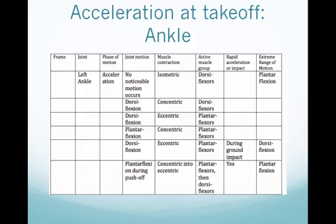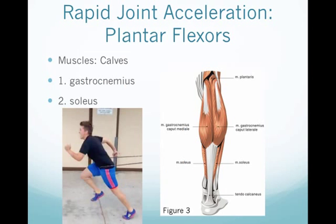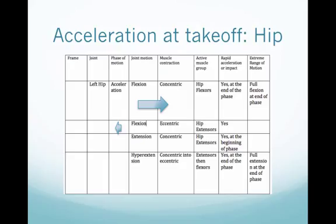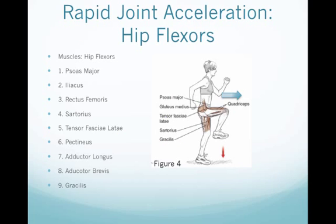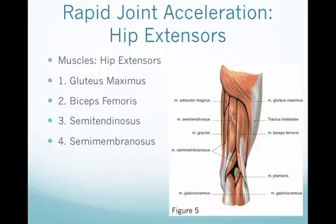During acceleration, the left ankle undergoes rapid dorsiflexion with the foot's impact on the ground. The biggest motion for propulsion is when the plantar flexors concentrically work to rapidly accelerate at the ankle and get that push-off — the gastrocnemius, soleus, and calf muscles are most notably involved. At the hip, we see a big, rapid acceleration of the hip flexors as the hip moves concentrically into flexion, then slows down as the hip extensors begin to contract, and then the flexors concentrically contract again at the end of the phase. The hip flexors and extensors are the muscles most notably involved.